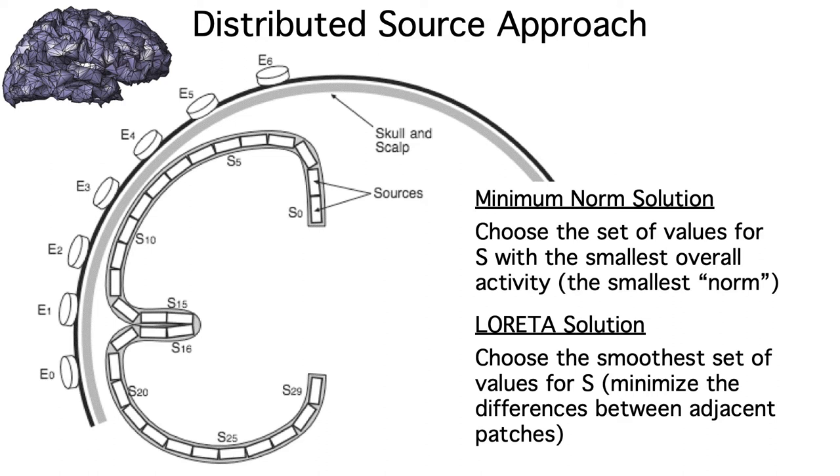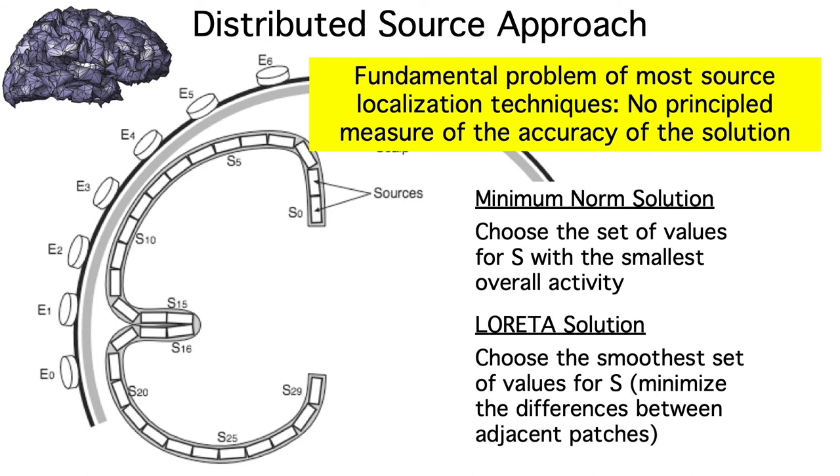So, which solution is correct? Minimum norm or LORETA? That's the problem. We have no reason to believe that either of these solutions captures the true distribution of activity across the cortex in every situation, or even in any single situation. This brings up the fundamental problem with almost every mathematical approach to source localization. They provide no principled measure of the accuracy of the solution.